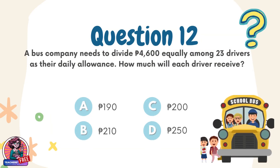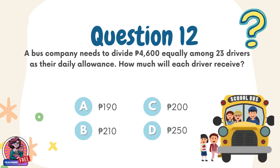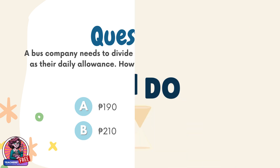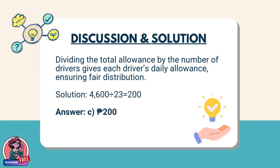Question 12. A bus company needs to divide 4,600 pesos equally among 23 drivers as their daily allowance. How much will each driver receive? Choices: A. 190 pesos, B. 210 pesos, C. 200 pesos, D. 250 pesos. Discussion: Dividing the total allowance by the number of drivers gives each driver's daily allowance, ensuring fair distribution. Solution: 4,600 ÷ 23 = 200. Answer: C. 200 pesos.